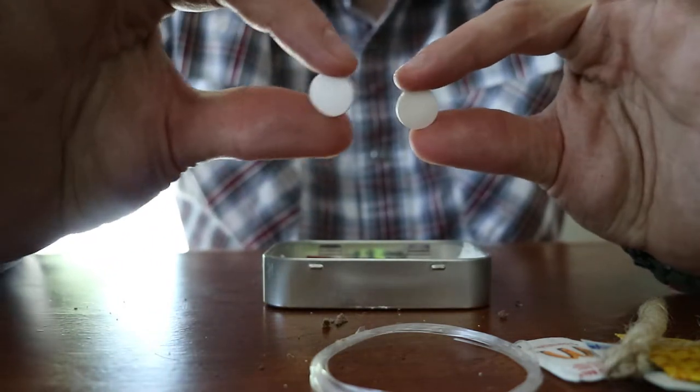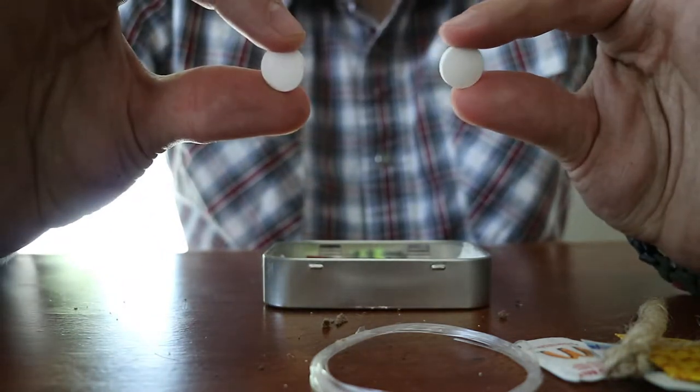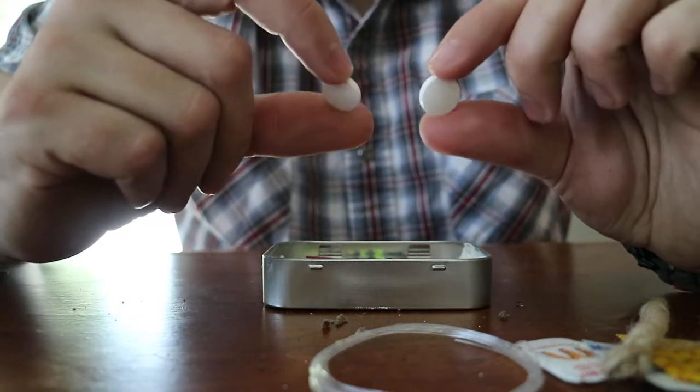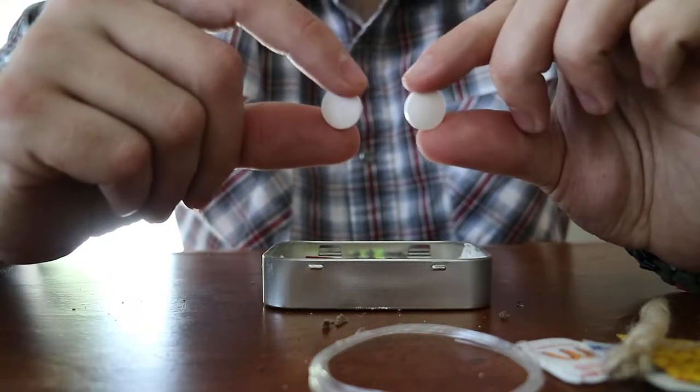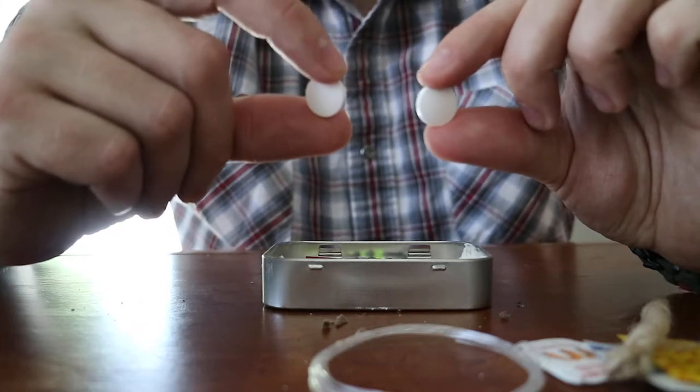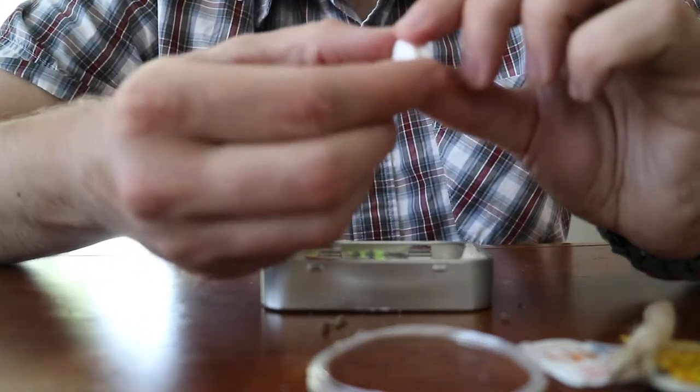Seeing as I'm using Altoids tins, there's two Altoids mints in there. They help keep your saliva in your mouth, keep you hydrated. It's also a good little sugar boost. And it's something familiar, which is what you can always use in a survival situation.